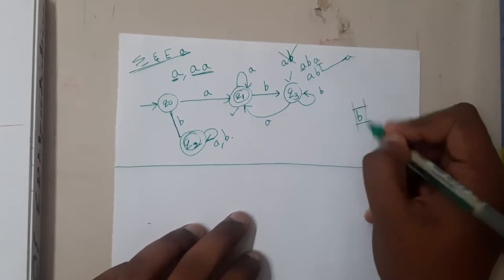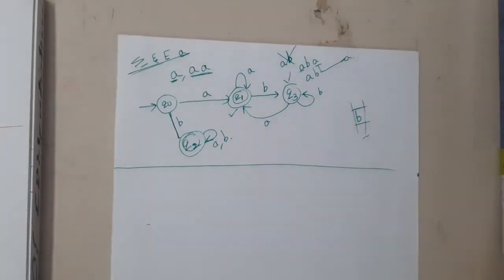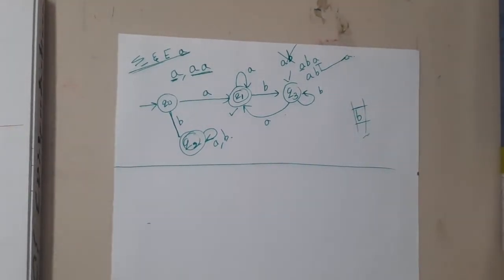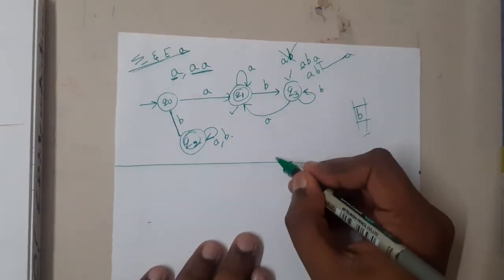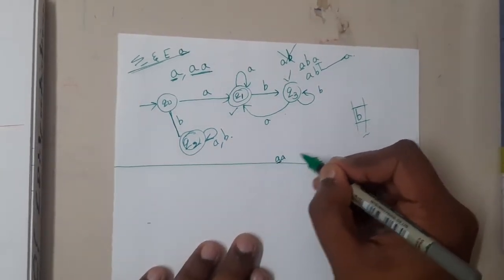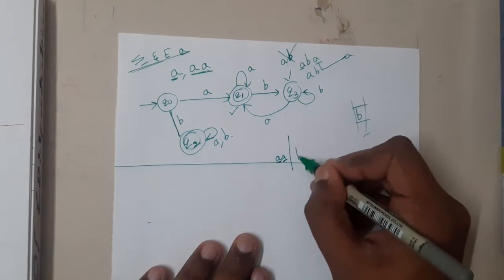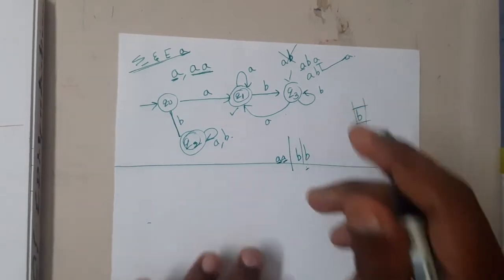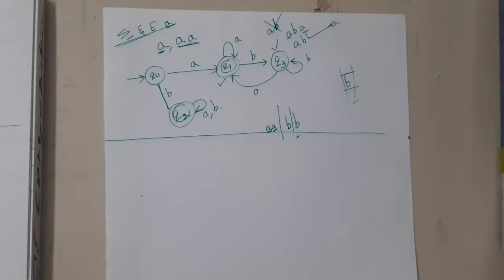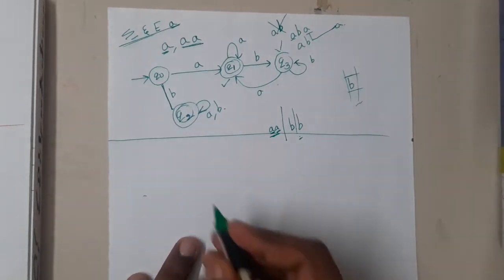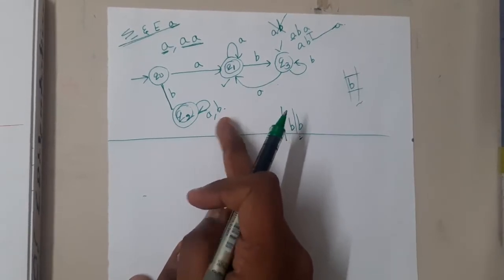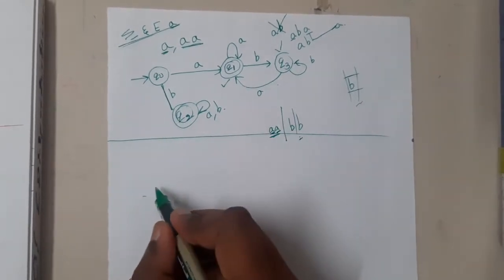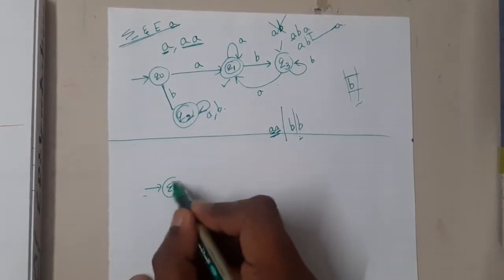Now let us go through the next thing: starting and ending with the same symbol. Indirectly I want to build — starting with 'a' and ending with 'a', and starting with 'b' and ending with 'b' — in a single diagram. The first case is starting with 'a' and ending with 'a', which is the diagram from above.